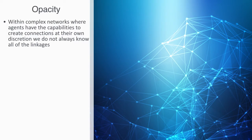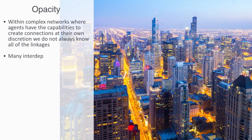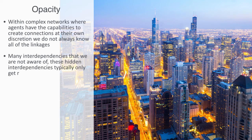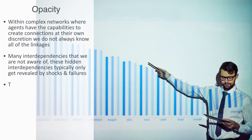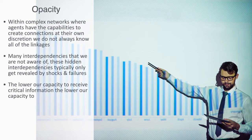Complex networks like our global financial system and global supply networks have many interdependencies that we are not aware of. These hidden interdependencies typically only get revealed by shocks and failures. The more opaque the system, the lower our capacity to receive critical information about it, thus debilitating our capacity to use a centralized regulatory system in order to manage it.